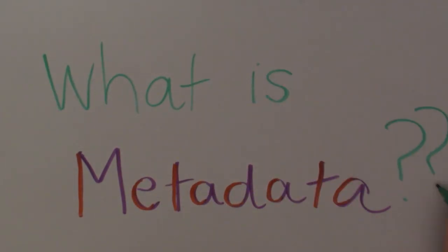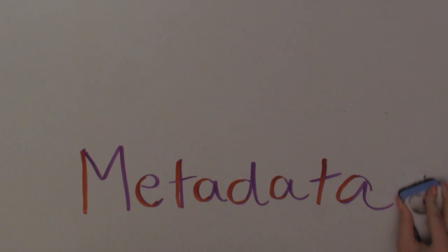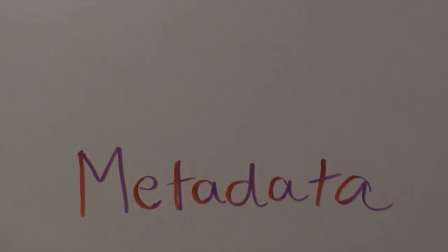You might have heard it referred to as data about data, but when the term data can mean different things to different people, what does that actually mean? To answer this, let's talk about two different kinds of metadata, descriptive and structural, and how they relate to one another.